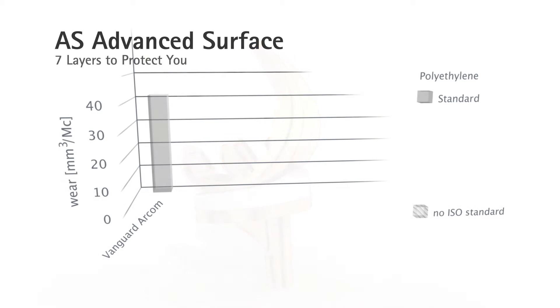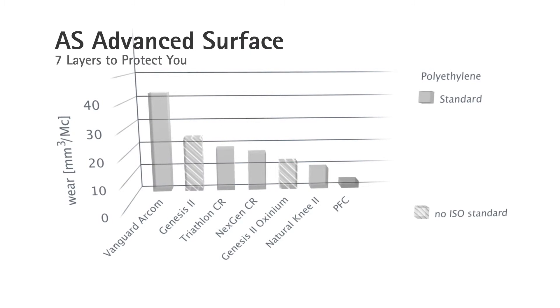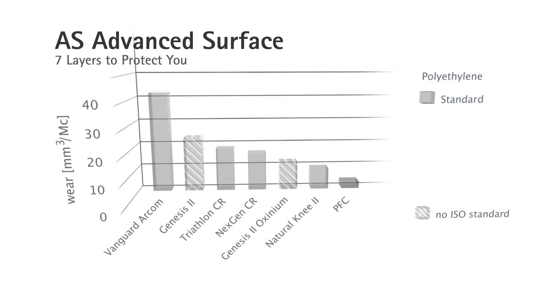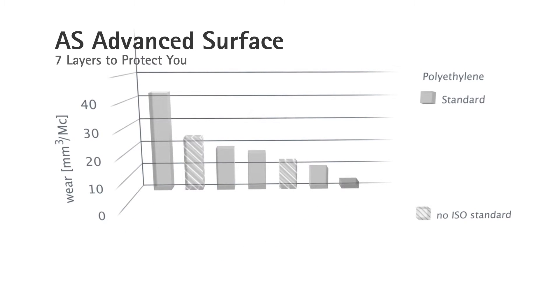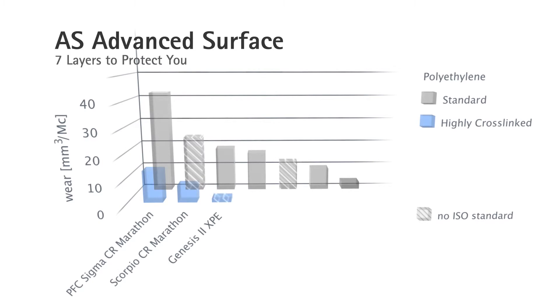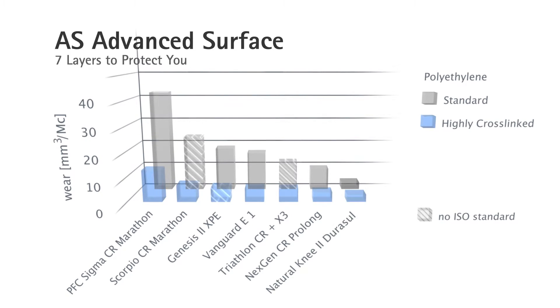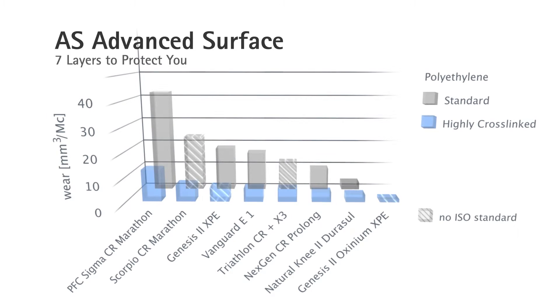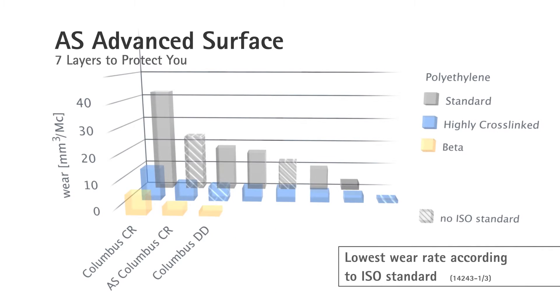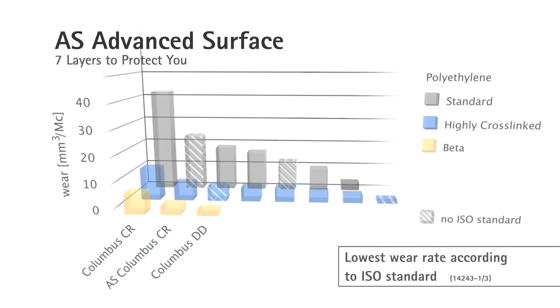As known from literature, highly cross-linked polyethylenes have reduced mechanical properties in terms of elasticity and impact strength. Beta PE combines the advantage of low wear with good mechanical properties of conventional polyethylenes. The new knee implant from Escolab...